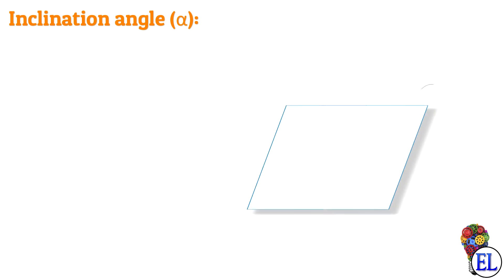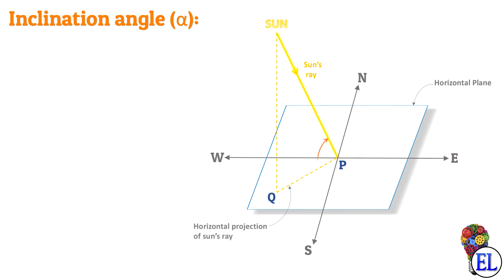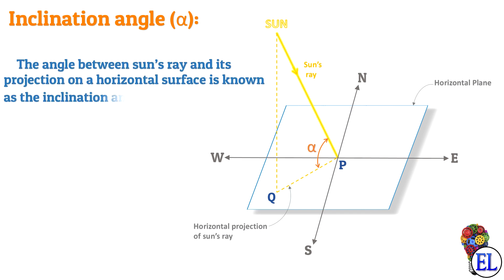Now let us understand inclination angle alpha. Consider a horizontal plane with directions north, south, west, and east marked. Taking a sun's ray and marking the point of incidence on the horizontal plane as P, the projection of the sun's ray on the horizontal plane is PQ. The angle formed between the sun's ray and its projection on the horizontal plane is known as inclination angle alpha.